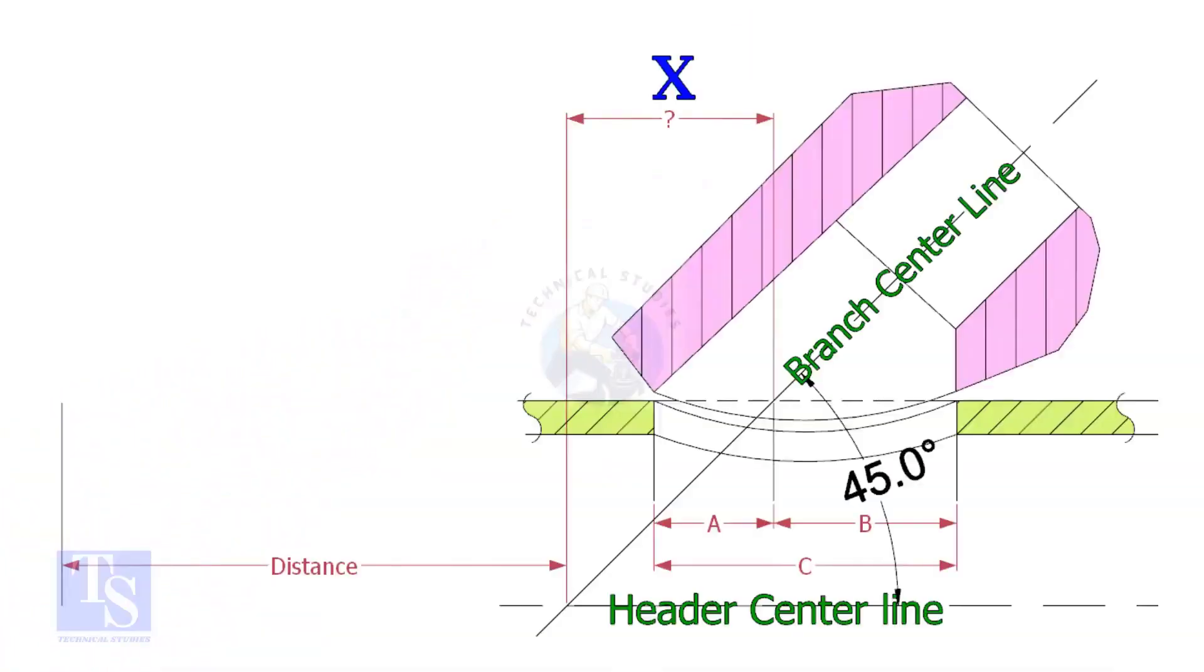Most commonly, lateralets are used for 45 degree branch connections. In a drawing, the distance to the center of a lateralet is given from a certain point. This distance is actually on the center of the header pipe. By applying a simple calculation, we can find the actual center that comes on the top of the pipe.